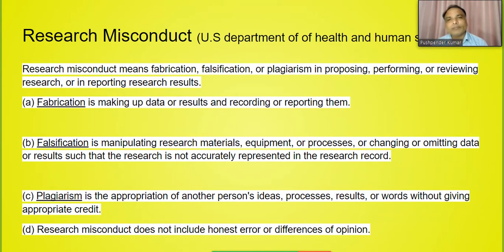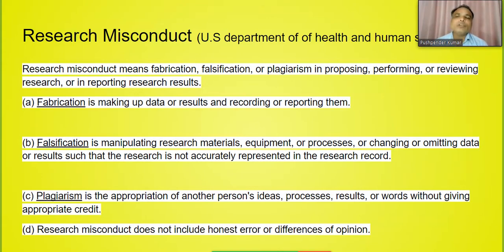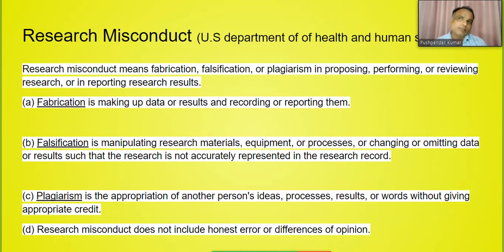And lastly, very important - plagiarism. Plagiarism is the appropriation of another person's idea - copying and pasting another person's write-up, articles, ideas, process, result or words without giving appropriate credit. According to UGC norms, when you submit your paper for promotion or to get a job, plagiarism should not be more than 10%. Two software tools are used: Turnitin, which many people use, and Urkund, which UGC has recommended for government universities.